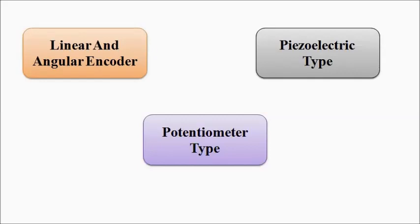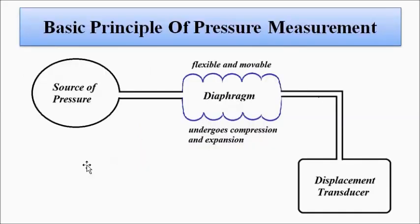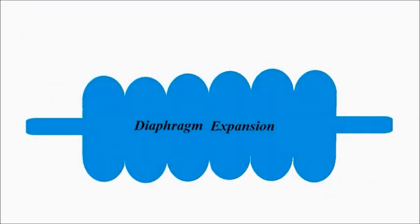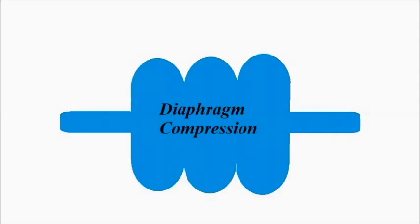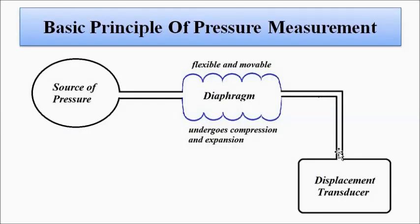The main principle involves the diaphragm being connected to the point where pressure is to be measured. Because of the change in pressure at that specific body part, the fluctuations cause the diaphragm to expand or compress. As a result, the other end connected to the displacement transducer causes movement in the sensing element, and that gives us the electrical output with proper signal conditioning.